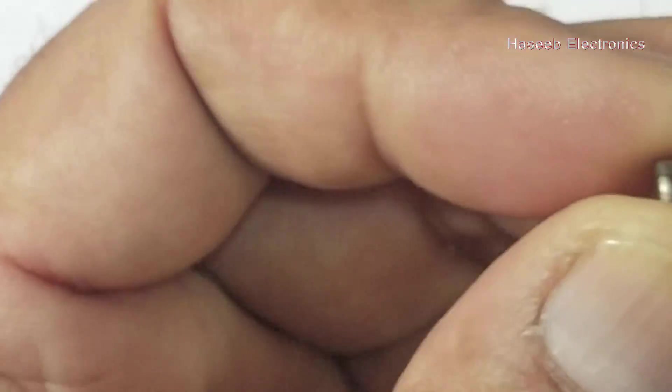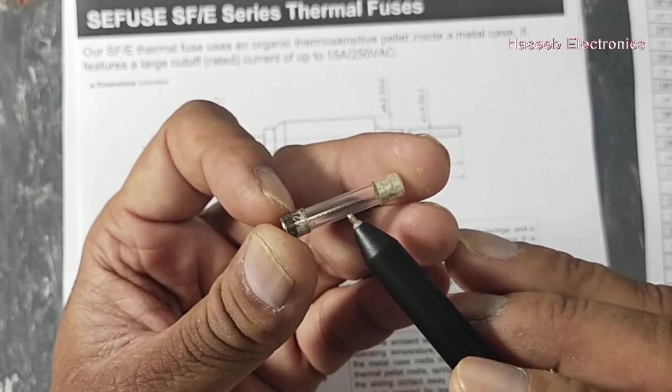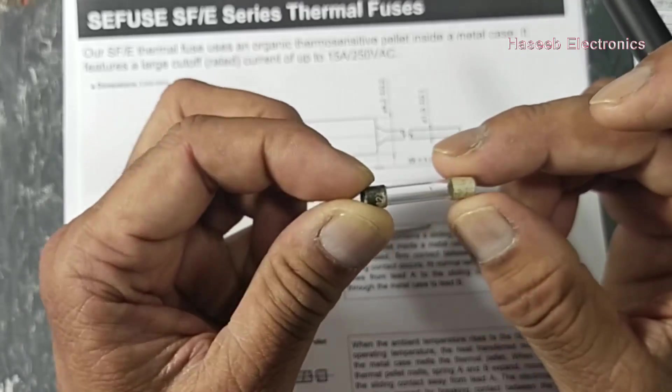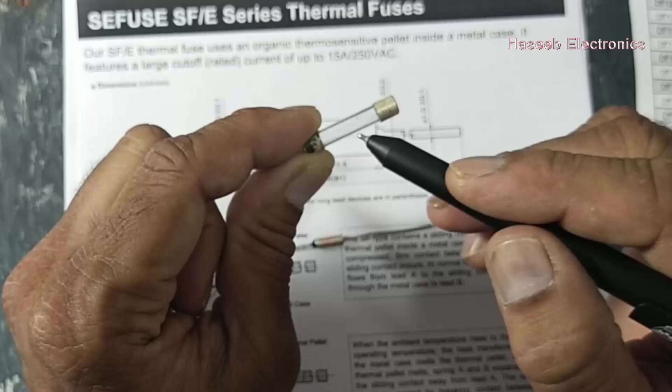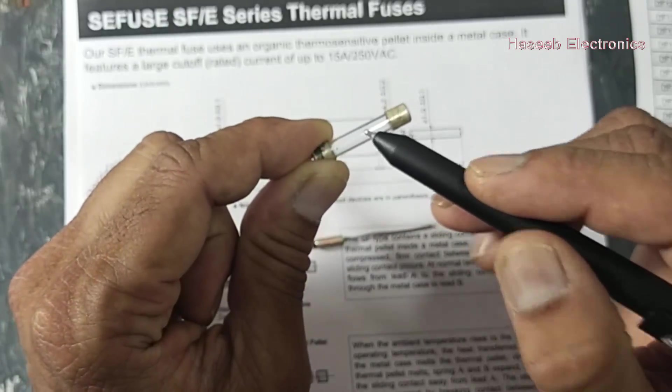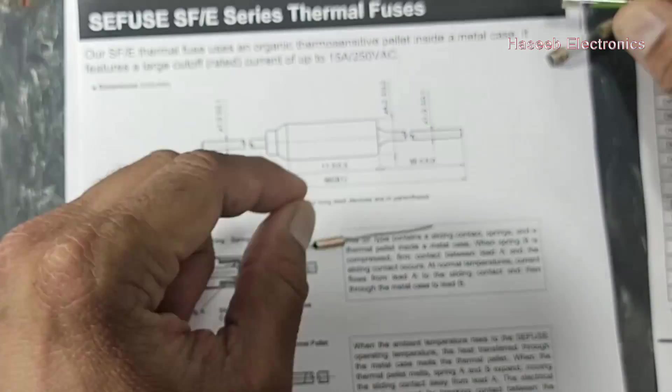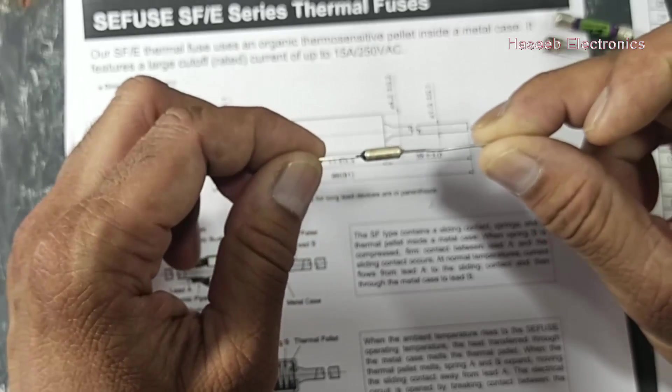Regular fuses are wire based. When the current increases, this wire will burn out at its melting point. It needs a specific amount of current to dissipate power to heat up the wire. There are slow blow fuses and fast blow fuses, but this fuse has a different category. It does not have a wire.